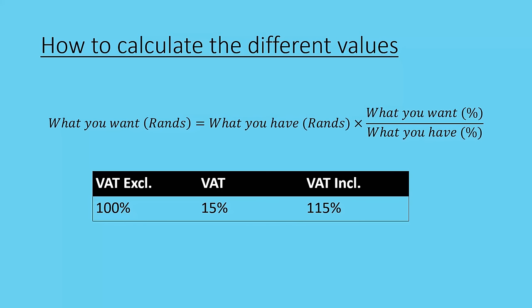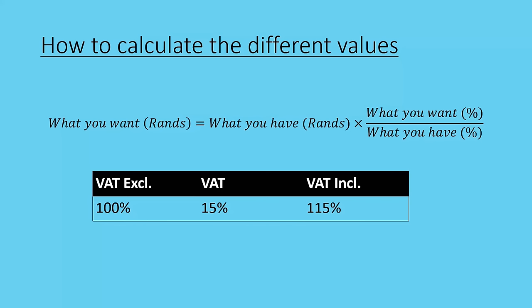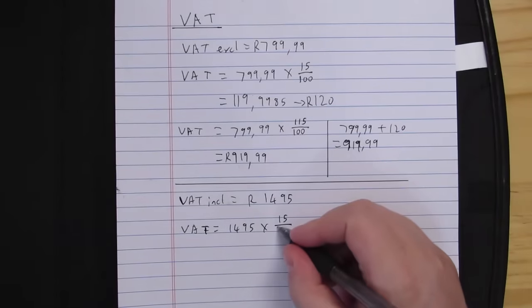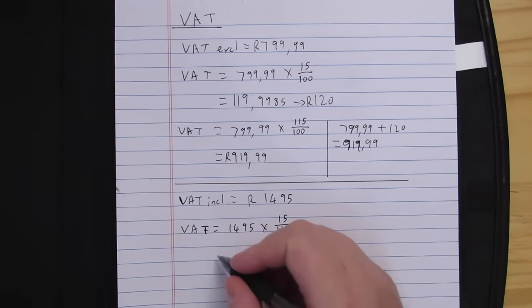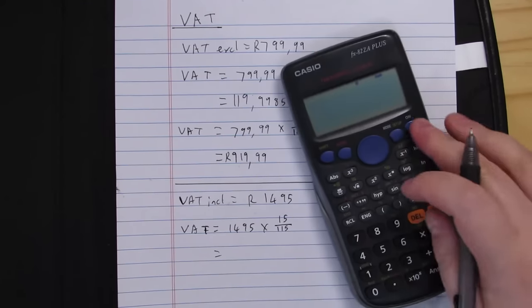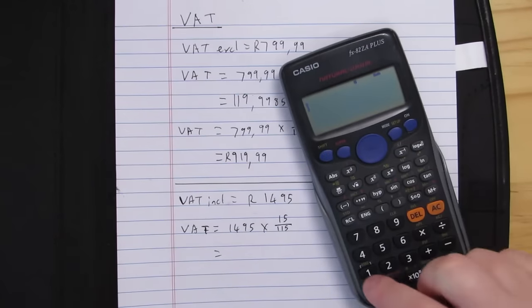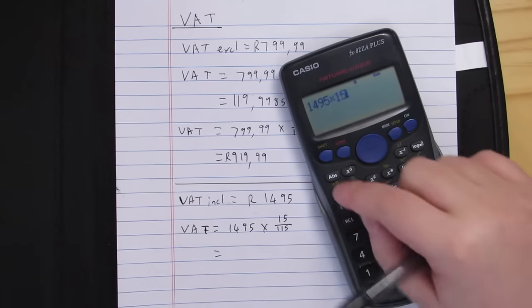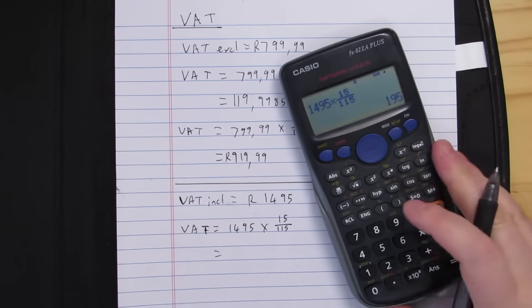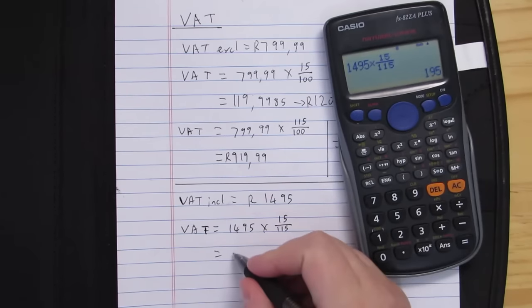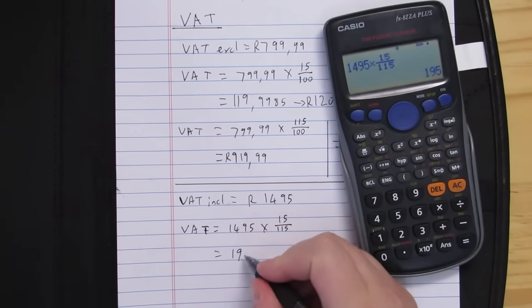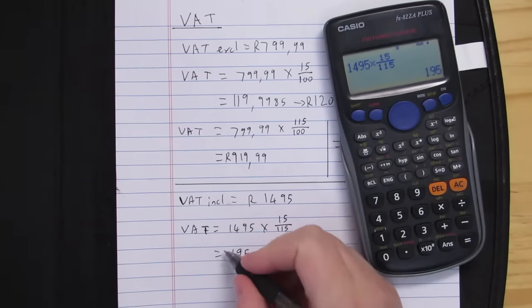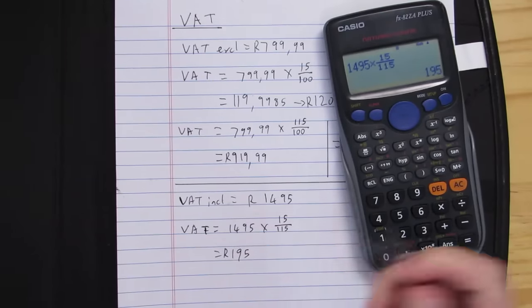So I use 15 over 115. Type it into the trusty calculator and I get 195 Rand. So that was my VAT on this amount.